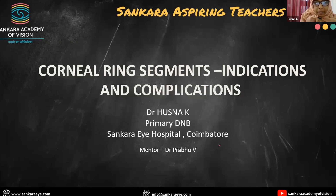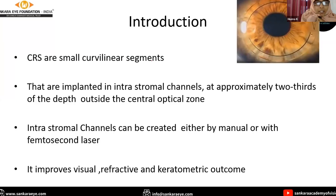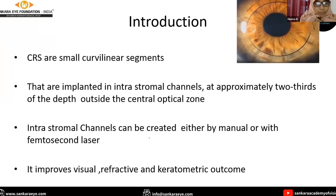Good evening to all. My topic is Corneal Ring Segments: Indications and Complications. Corneal ring segments are small curvilinear segments that are implanted in intrastromal channels. These channels can be created either manually or with femtosecond laser. It improves visual, refractory, and keratometric outcomes.